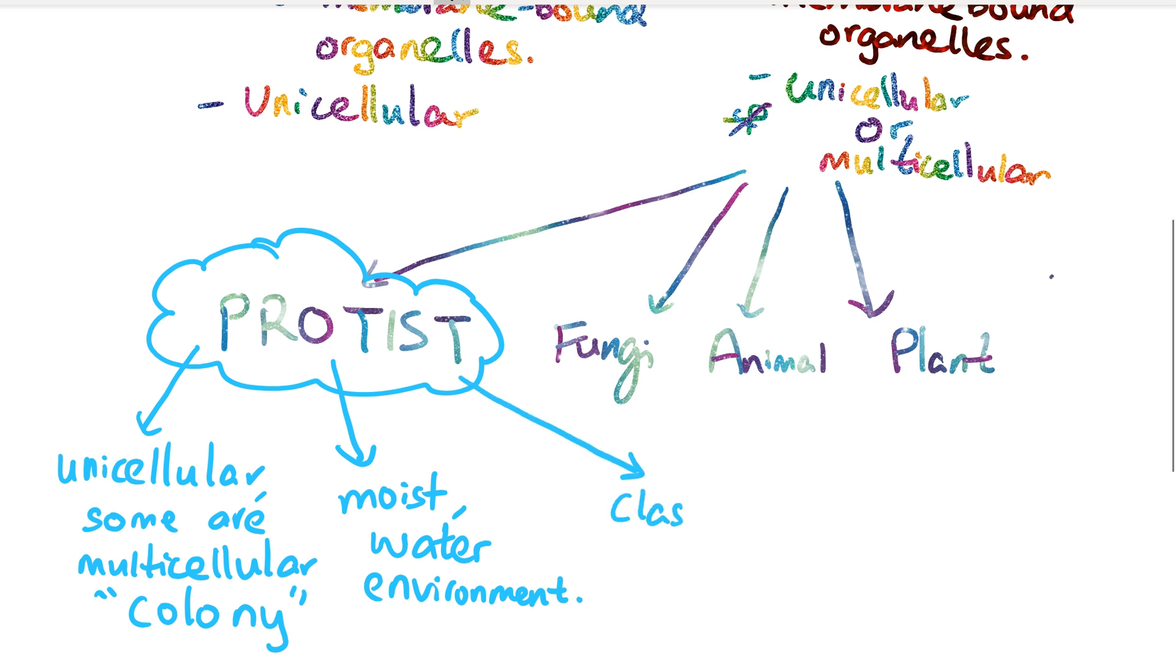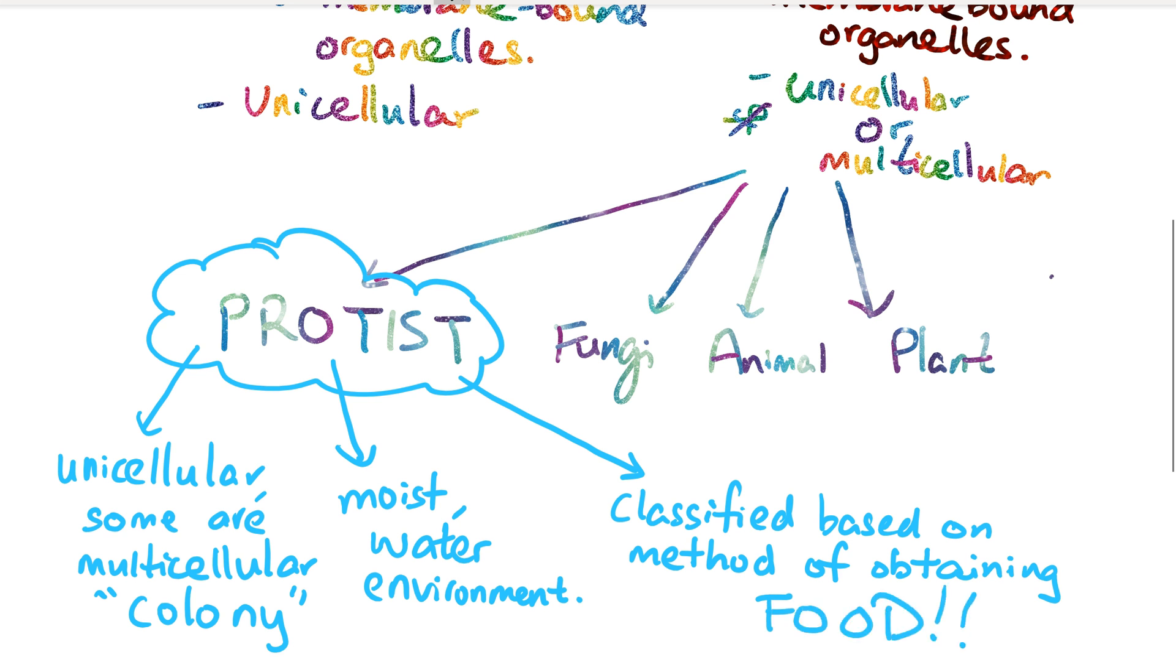Protists can be classified by looking at the way they get their food. We classify them based on the method they get their food from. There are three ways in which protists can get their food.